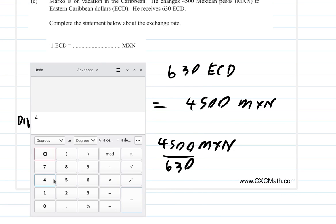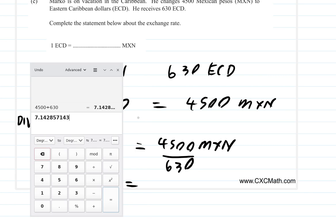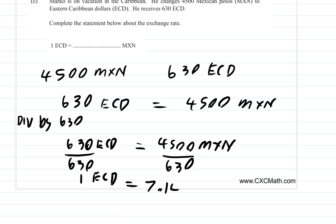4,500 divided by 630 equals, and what we have is 7.143, 7.143, 7.143 MXN.